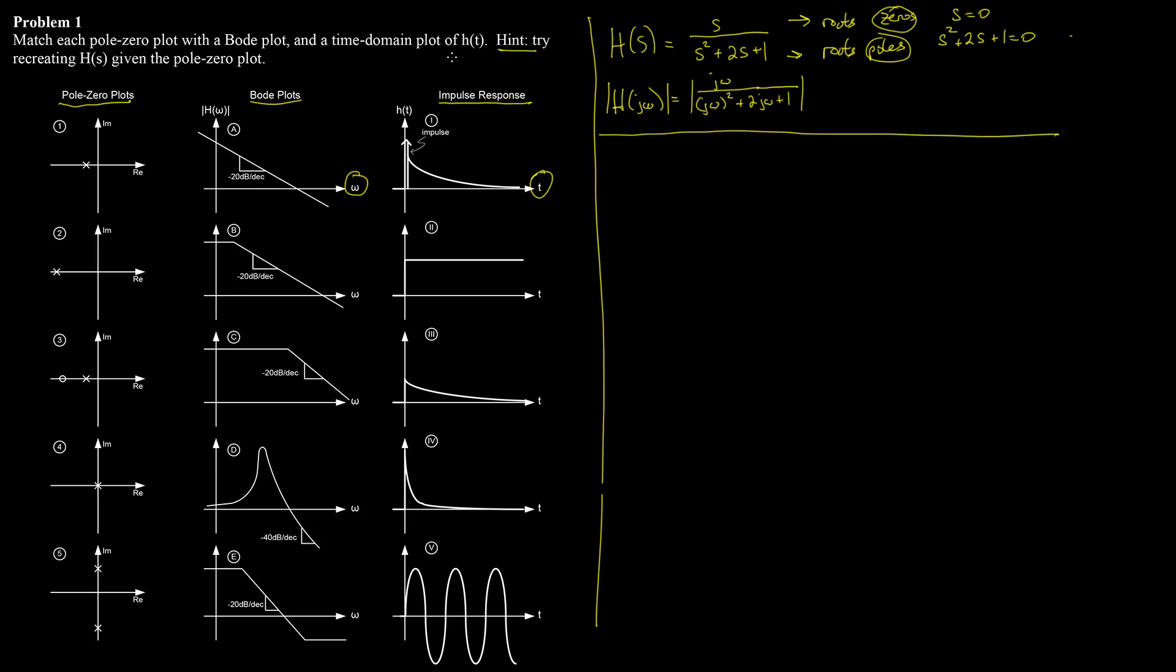Let's take a look at how to solve this problem. So use the hint, try recreating h of s given the pole zero plot. So for problem one, it looks like we've got a single real pole. See if there's any others that look like that. Number two looks like that, too. The pole is just further out. Everything else looks different. So one and two will both be of the form h of s. We've got no zeros in any of these. So therefore, the numerator will be one. And the denominator here might look something like, it's not labeled with numbers, but let's call it s plus one. And that will help us differentiate it from number two, where our s looks much bigger and negative. So that might be something like, I don't know, s plus ten.